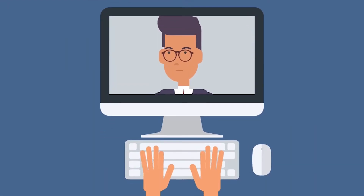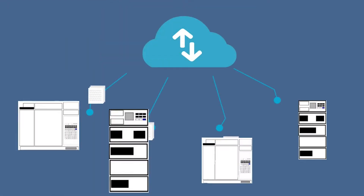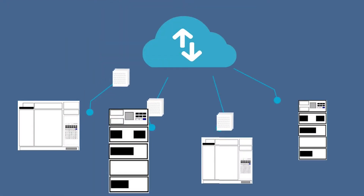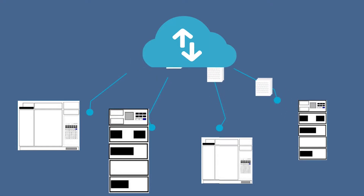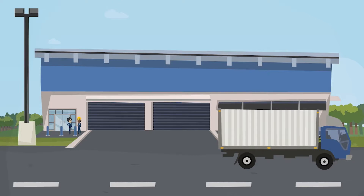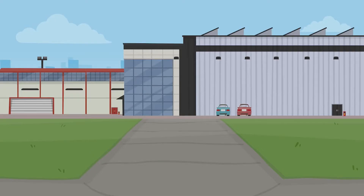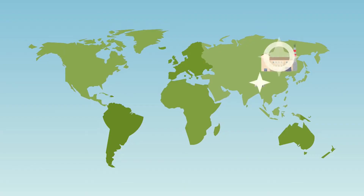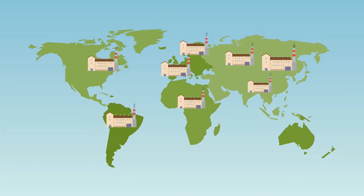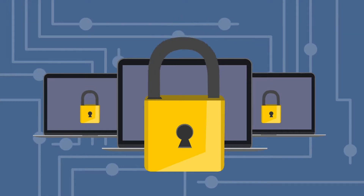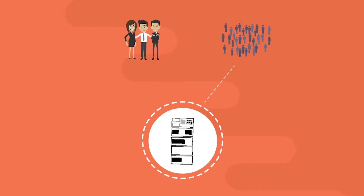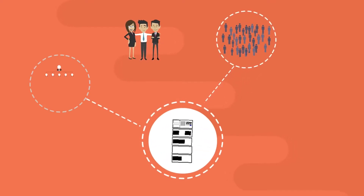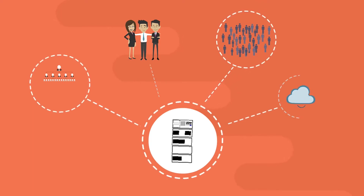With standalone database or cloud versions available, you can safely and securely manage your data regardless of how large or small your chromatography department is. As your organization grows, ChromePerfect Unite can be scaled to meet your needs, from a single laboratory to a large corporation with multiple sites. Store data securely, but share it instantly across the entire organization, with your partners or your customers.